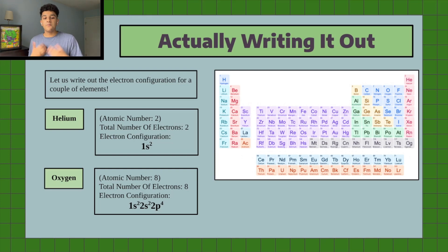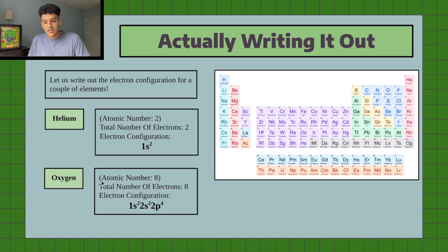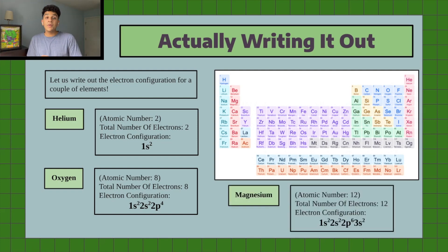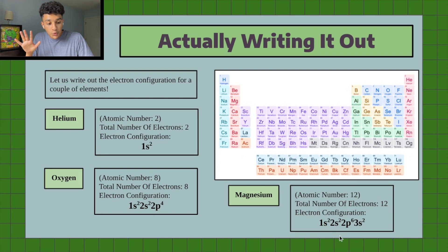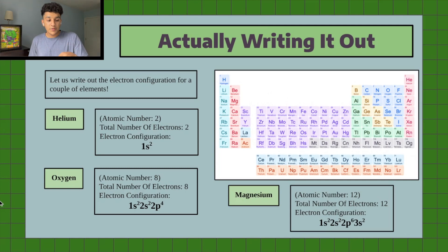A good way to check your electron configuration is to add up all the exponents — if they equal the element's atomic number, you're most likely correct. For magnesium with atomic number 12, we fill 1s² 2s² fully giving 4 electrons, then fill 2p completely giving 10 electrons (2+2+6), and since we need 2 more we fill 3s². So 2+2+6+2 = 12 total electrons, which matches magnesium's atomic number — that is the correct electron configuration.